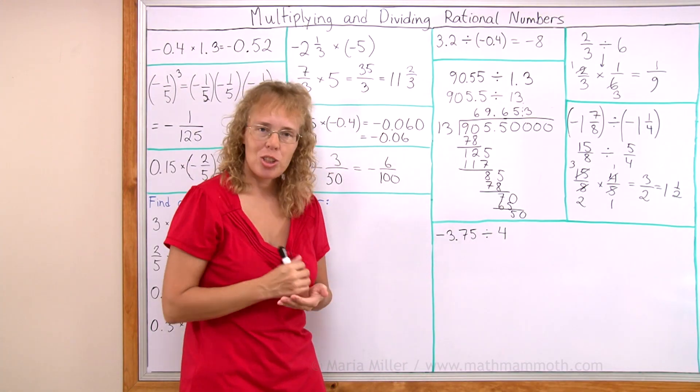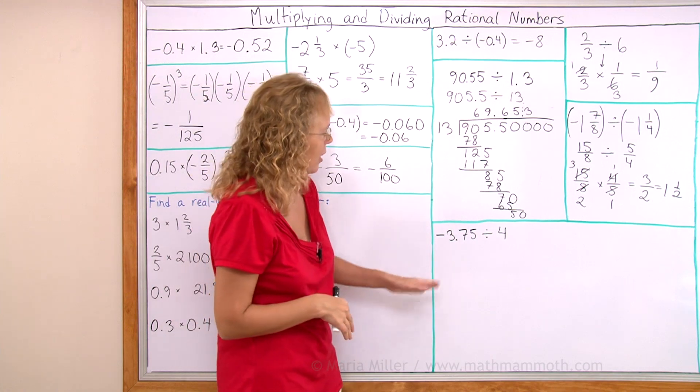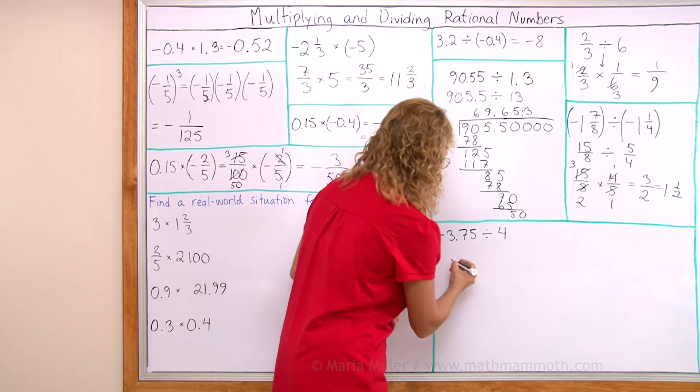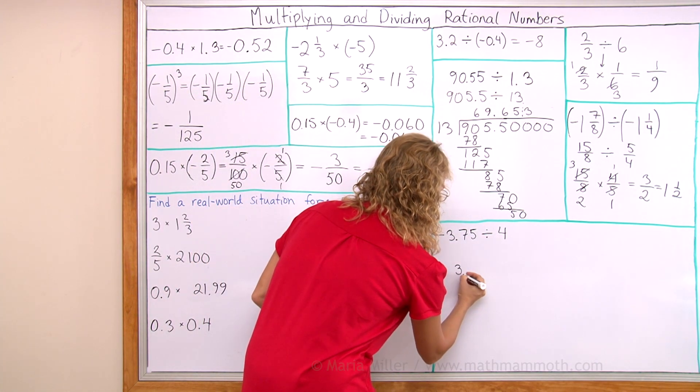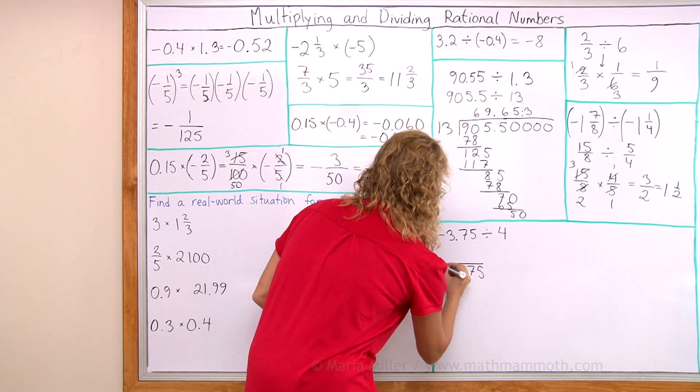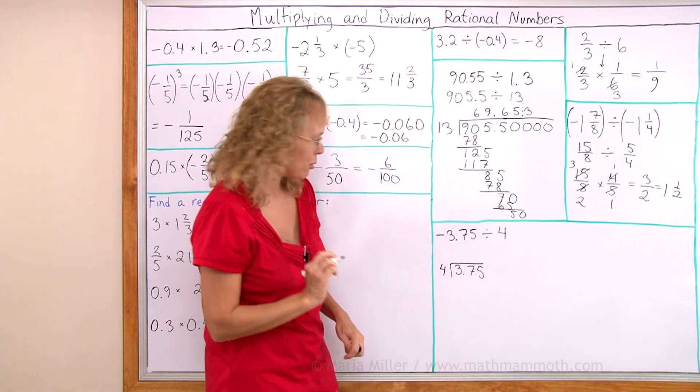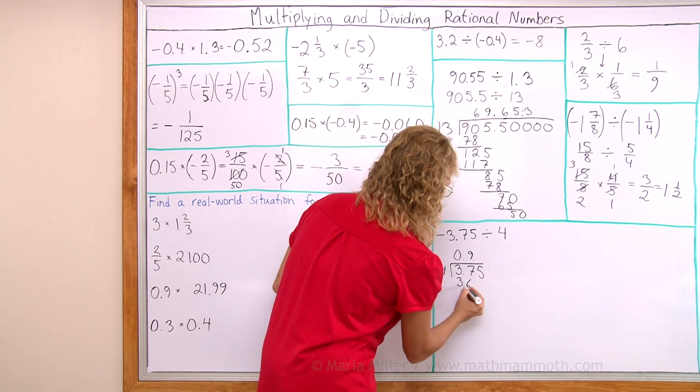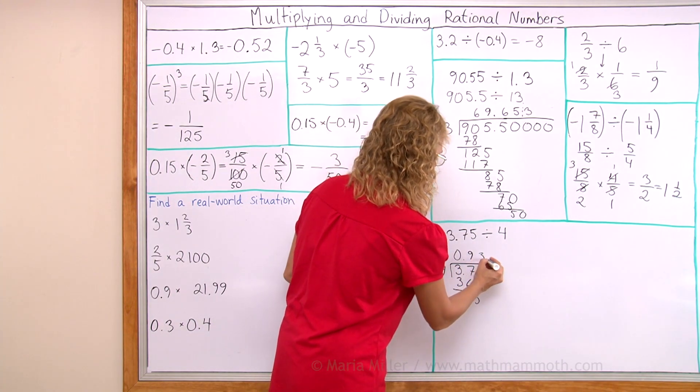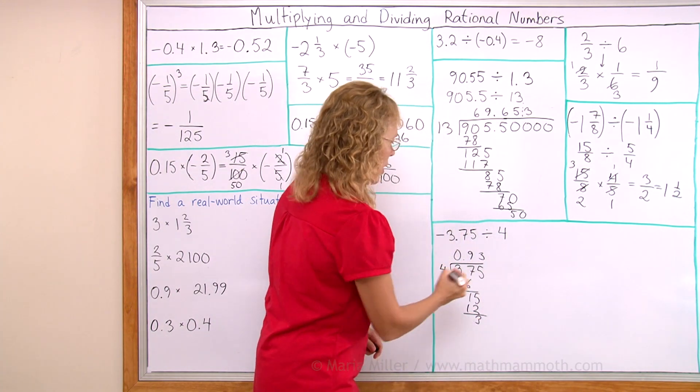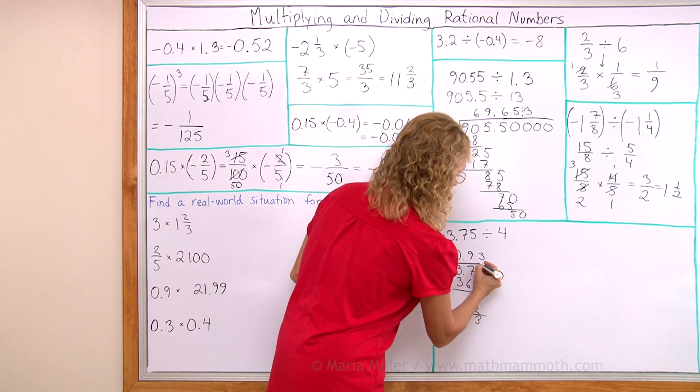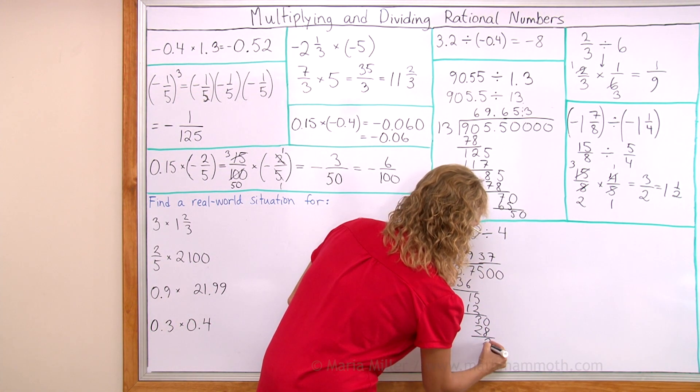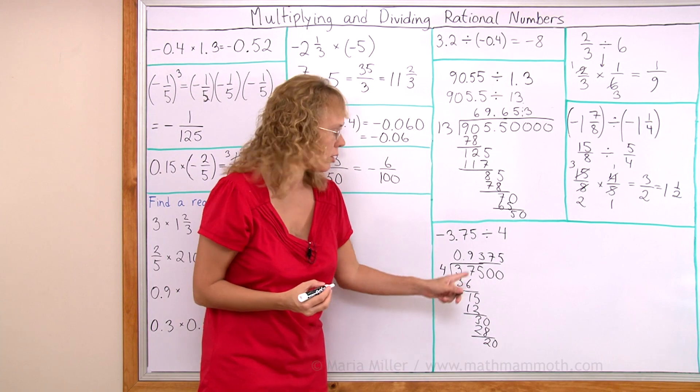Lastly, this problem, I want to show you two ways to do it. First of all, we could use decimal division, in long division. Just basic long division, and get our answer as a negative. And then we'll find another way to do it too. 4 goes into 3, zero times. 4 goes into 37, nine times. So we get 36. And then 15, it goes three times. And now I will continue the division. Add some decimal zeros here. 4 goes into 30, seven times. We get 28, and then 20. And now it was even division, so that's our answer.